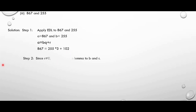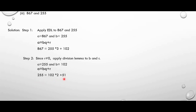Since the remainder is not equal to 0, apply Euclid's division lemma to b and r, that is 255 and 102. Now a becomes 255 and b becomes 102. Again applying the formula a equal to bq plus r, we get 255 equal to 102 into 2 plus 51. If you don't get the quotient as 2 and remainder as 51, again we don't have remainder as 0. Apply Euclid's division lemma to b and r, that is 102 and 51.